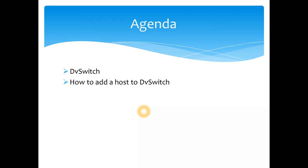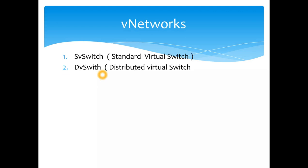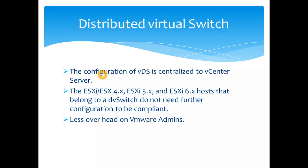The agenda for today is distributed virtual switches, which we deployed in the previous session. Today I am going to use the same distributed virtual switch and show you how to add an ESX host to it. If you haven't seen the standard virtual switch session, you can always go back and check that — we have covered both standard and distributed. Just to remind you, the configuration of a distributed virtual switch is centralized to the vCenter server.